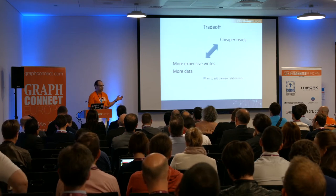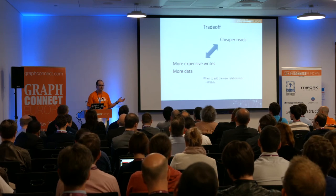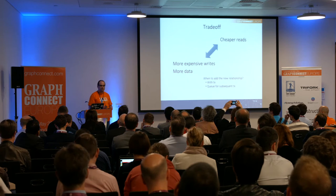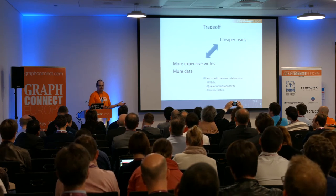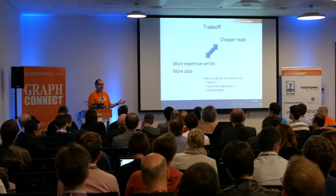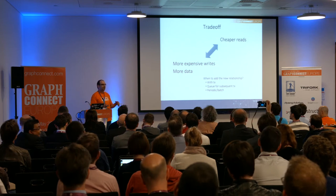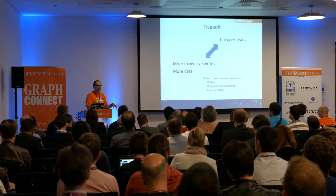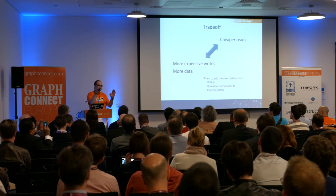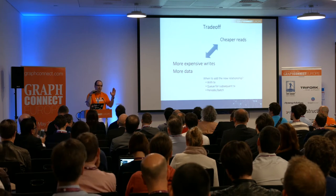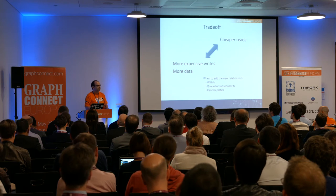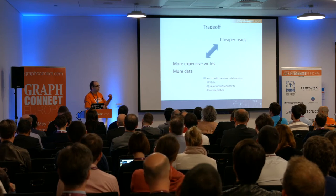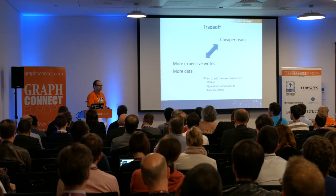The question is also when to add these inferred relationships. You can add them within the same transaction — either explicitly or via a transaction event handler. You can queue them for a subsequent transaction, or you can have some periodic background job. Which is best? Typically the consultant answer is: it depends — on how real-time critical your queries are. Doing the batch thing is okay if you have a different distribution of load over the day, like a night downtime window. But if you want shortcuts immediately and extremely consistent, you need to do it within the same transaction, and then writes get massively more expensive.